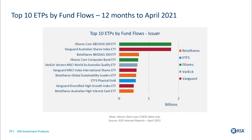The Vanguard Diversified High Growth Index ETF features in the top 10 — that fund allows investors through one transaction via their broker to get a very diversified portfolio. And it's probably not a surprise to also see the ETF Securities Physical Gold Fund feature in the top 10.